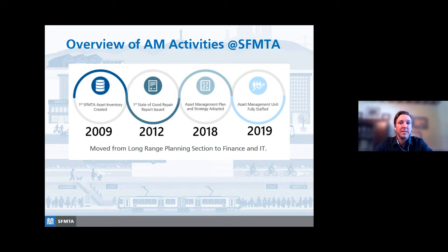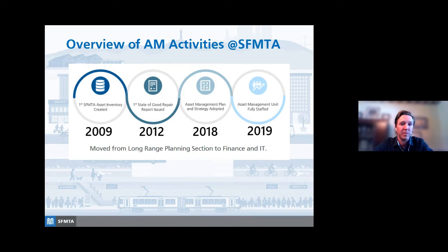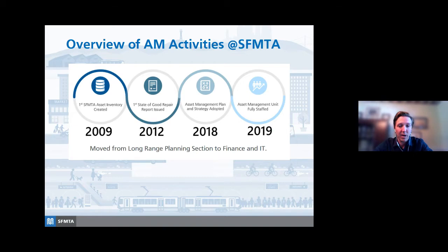The SFMTA has been working on implementing TAM principles for over a decade. As with most systemic changes, this is a slow but iterative process focused on continuous improvement. We started with a simple asset inventory and have moved to a dedicated team focused on asset management full-time. We have a growing condition assessment program, are improving our data collection processes, integrating with our enterprise asset management system, and improving how we communicate asset management best practices throughout the agency. One of the ways we do this is to get the message to decision makers through our capital budget-making process — one of the main reasons we moved asset management from long-range planning to the budget office about two years ago.